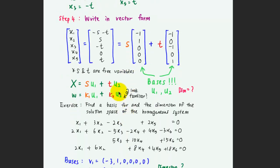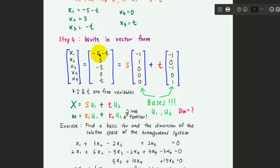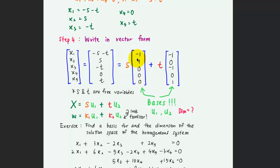The last step is to write the solution in vector form. Put everything into a column vector: x1 corresponds to negative s minus t, x2 to s, and so on. You can then factorize out the parameters s and t. For the s factorization, the column vector entries are the coefficients of s — negative 1 for x1, 1 for x2, 0 for x3, 0 for x4, and 0 for x5.